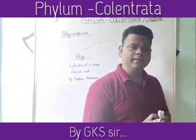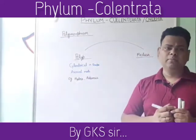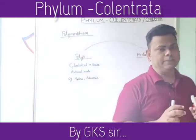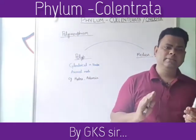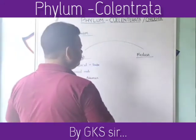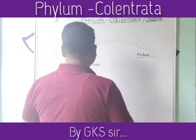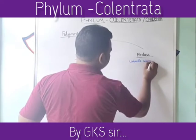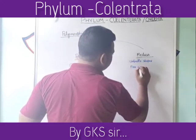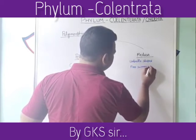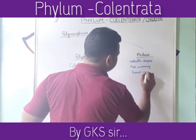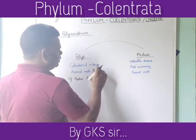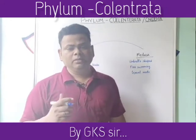The medusa form is a semi-circular, umbrella-shaped, free-swimming sexual form of reproduction. The medusa form is sexual whereas the polyp form is stationary, meaning it does not move freely.